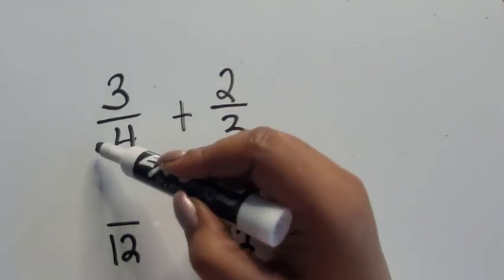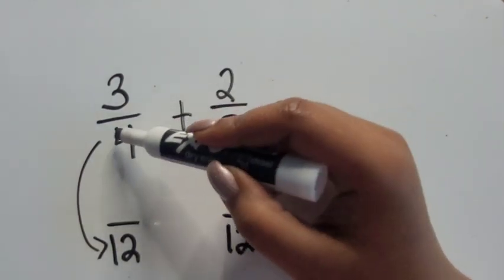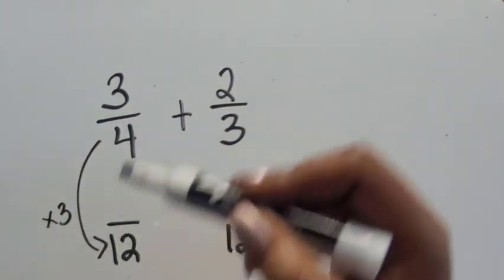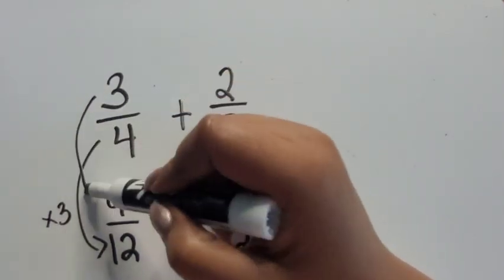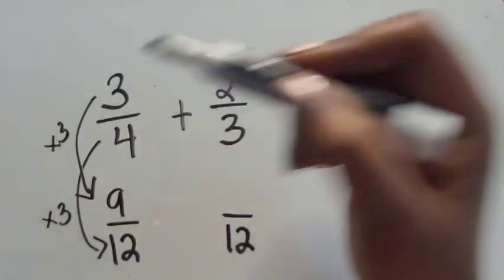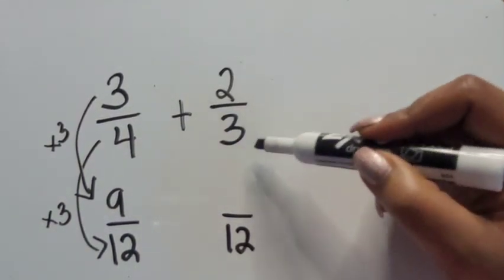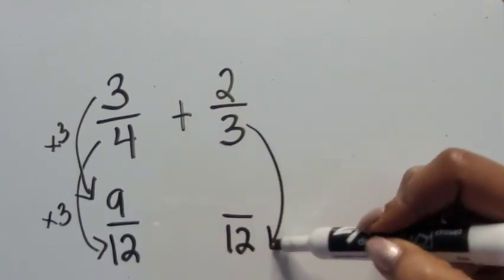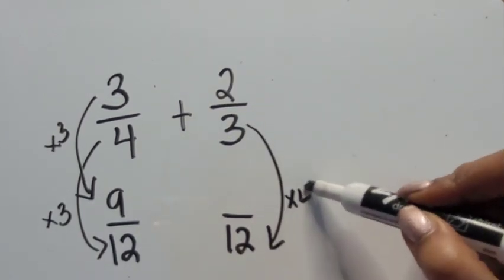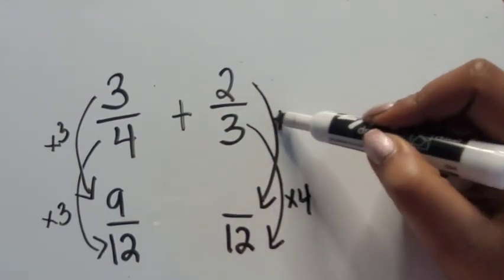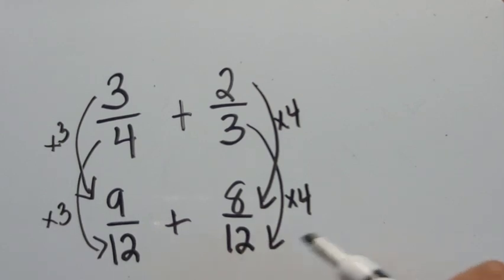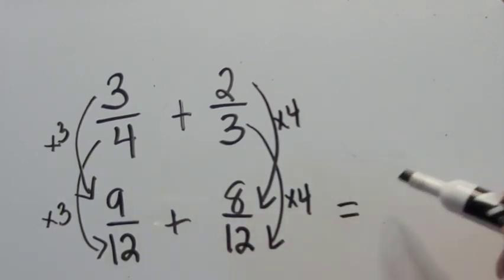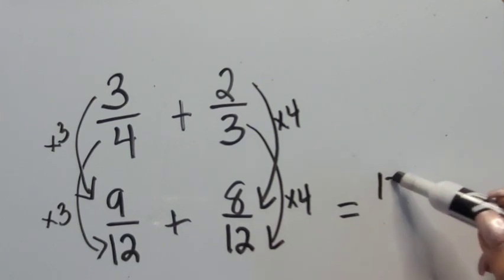If four times what is 12, we know four times three is 12, so we're going to multiply the numerator three by three as well, giving us nine-twelfths. For two-thirds: three times what equals 12? Three times four is 12, so we do the same for the numerator — two times four is eight. Now that our denominators are the same, nine-twelfths plus eight-twelfths is 17-twelfths.